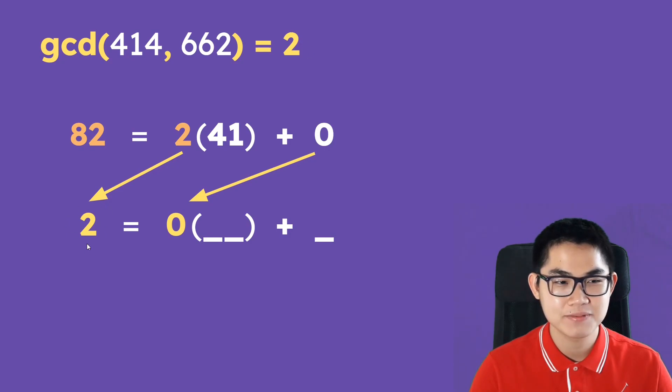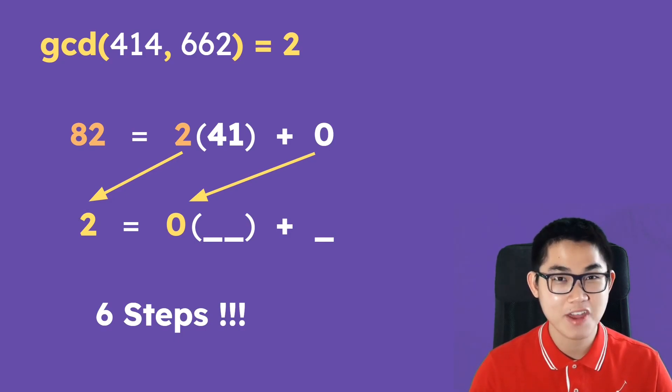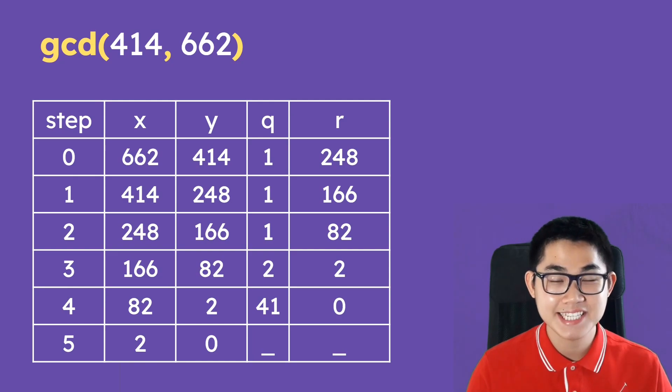The result is that the GCD of 414 and 662 is number 2, and this number 2 comes from the last line here. And as you can see, all of this takes only 6 steps to do, which is not a lot, that's very very fast. Sometimes on the exam they might ask you to fill in the table.